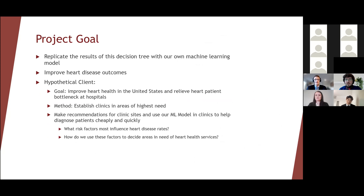We created a hypothetical client with funding to create heart health clinics. Our job was to create a machine learning model to diagnose patients at clinics with heart disease, and then recommend where the best locations were to place these clinics to help at-risk or in-need populations. This raised some key questions right away, like what risk factors most influence heart disease rates, and how are we going to balance the importance of these factors with helping the maximum amount of people — specifically people of low income or people without insurance?